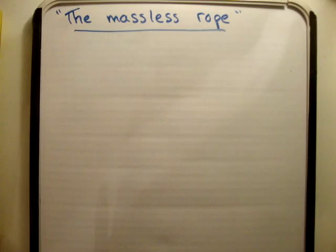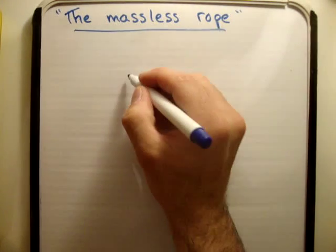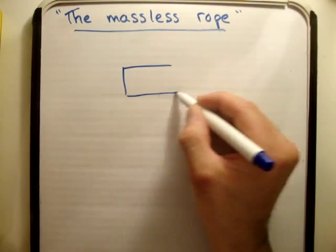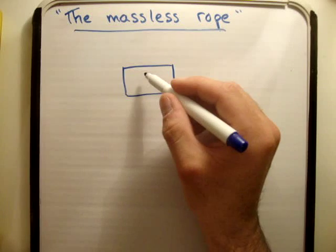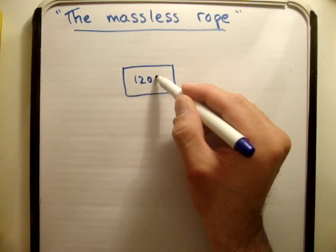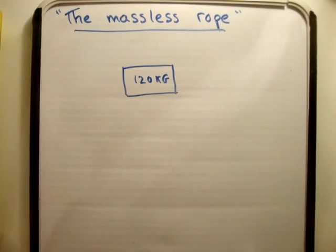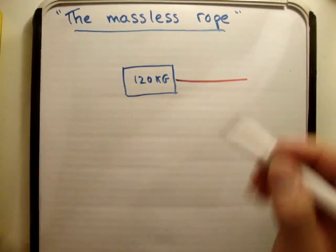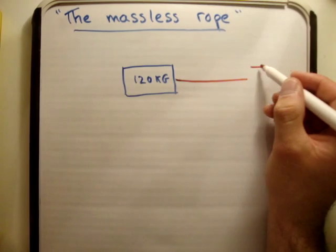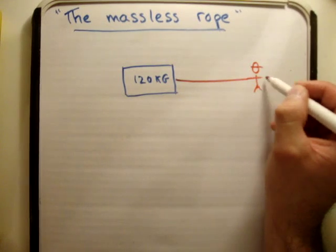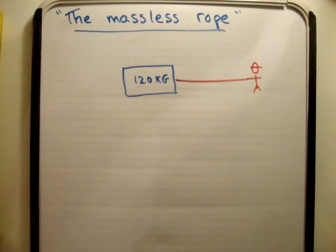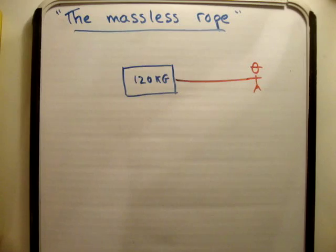Basically what we have is a body which I'm going to call a boat, and the boat has a mass of 120 kilograms. We have a rope and at the end of the rope we have a man who is pulling the rope. We also have a frictional force.